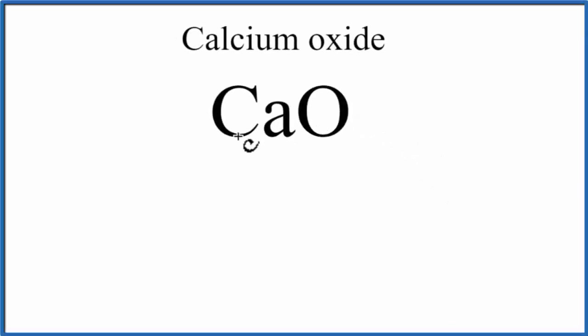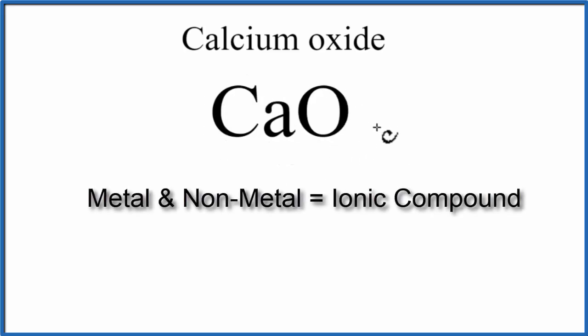In this video, we'll write the Lewis structure for CaO, that's calcium oxide. Calcium is a metal, and then oxygen, that's a non-metal, so we have an ionic compound.